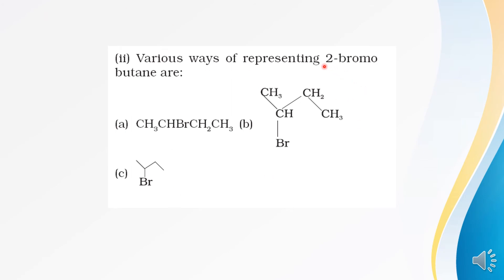Now, the compound 2-bromobutane — how to represent it in various ways. In one representation, Br is written in the middle of the chain, but carefully, Br is bonded with the second carbon atom by a single covalent bond. Carbon number one, two, three, and four: carbon number two is bonded with two carbon atoms, its third valency is fulfilled by hydrogen, and the fourth valency is fulfilled by bromine. This is one way of representing 2-bromobutane.